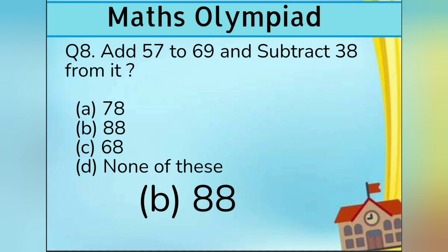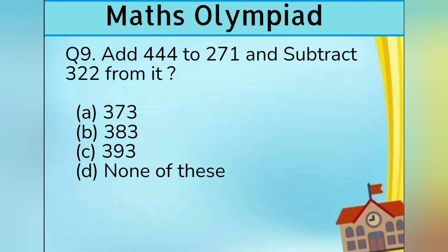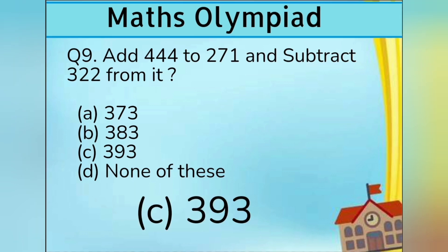Question number 9. Add 444 to 271 and subtract 322 from it. Option A 373, Option B 383, Option C 393, and Option D none of these. Answer is Option C 393.